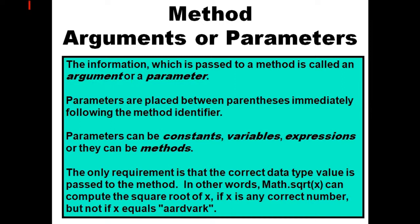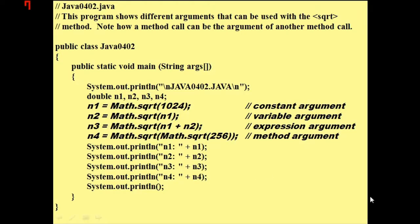It can also be a variable inside that which you saw in the last tutorial. It can be expressions or they can be methods which you also saw in the last tutorial. Math.sqrt and inside of that it says Math.sqrt(256), so these are all examples of what you can put inside of arguments or parameters.